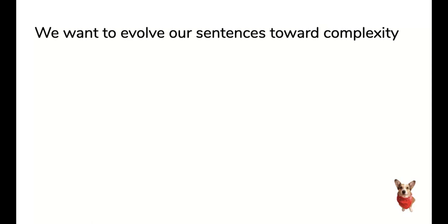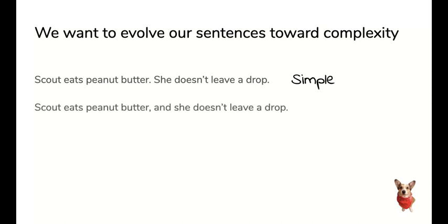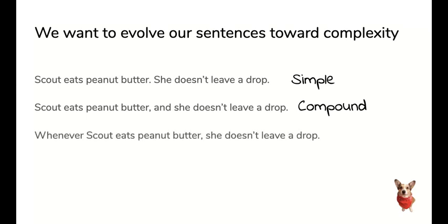So we've already learned about simple sentences such as Scout eats peanut butter, she doesn't leave a drop. And we've learned about compound sentences where you can put those two together using a conjunction. Scout eats peanut butter and she doesn't leave a drop. That's called a compound sentence. And today we're going to be looking at complex sentences such as whenever Scout eats peanut butter, she doesn't leave a drop.